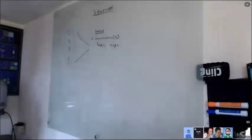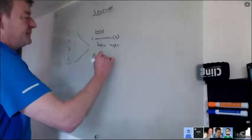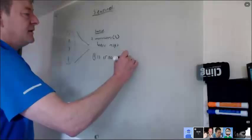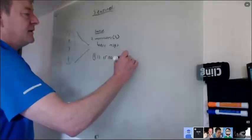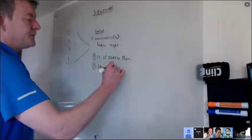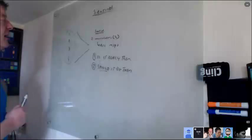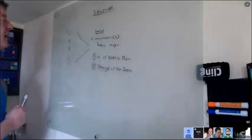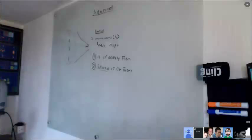One accumulator is to accumulate the messages, to make sure we get the right amount of messages required. So we know that 4 nodes sent us this message, but there are two things we don't know: number 1, is it really them — is it really nodes 1, 2, 3, 4 that sent that message? And number 2, should it be them?